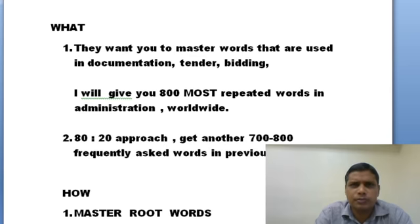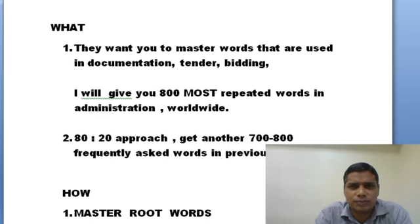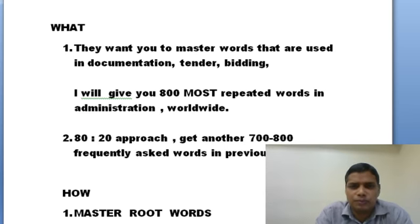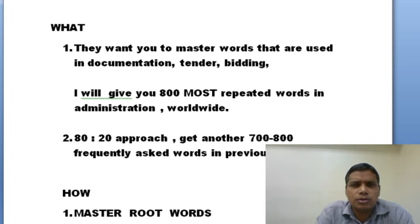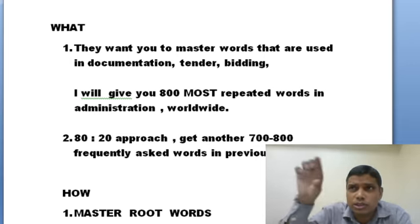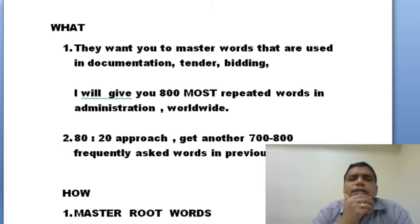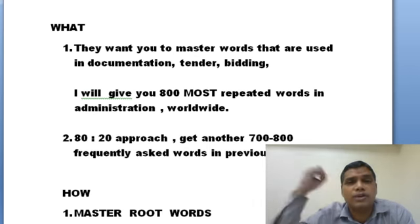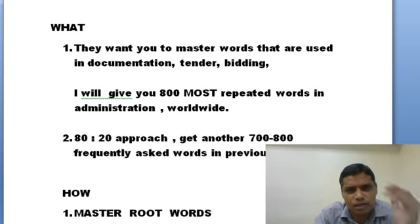The 80-20 approach means that, as I said, they are not bothered about lots and lots of millions of words. They are bothered about only the words that matter most to serve their purpose. The previous number of collections have 20% selected words — I think it doesn't even reach 2,000. Less than 2,000 words are repeated in the entire exam over the last 20 years. Your dictionary has millions of words, but these 2,000 words are repeated many times, while the millions of words are never tested.